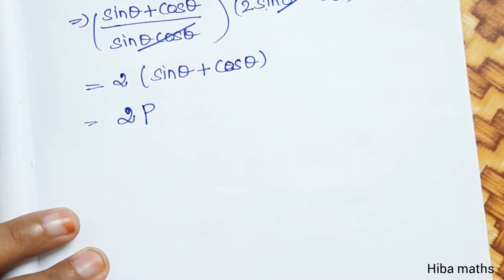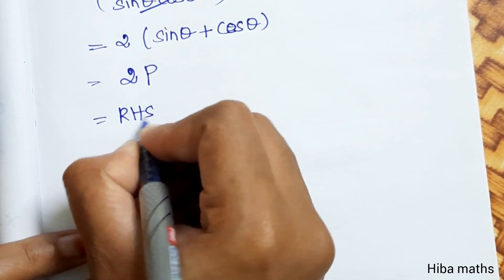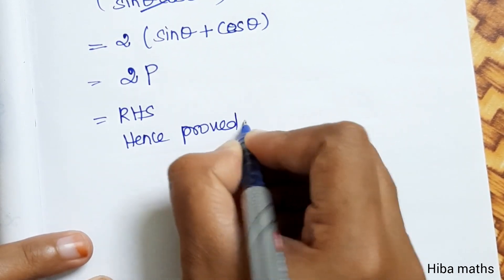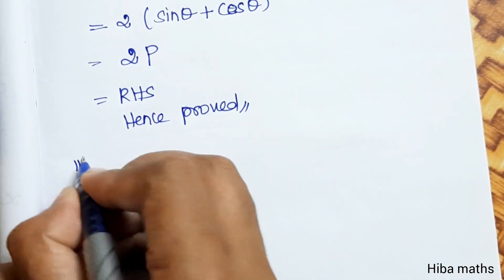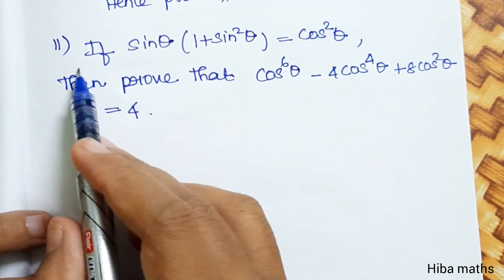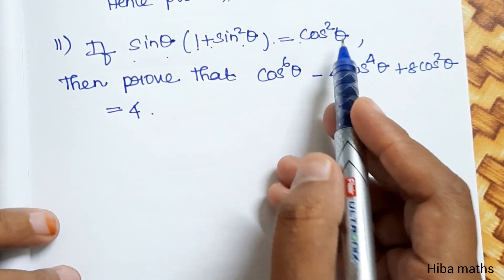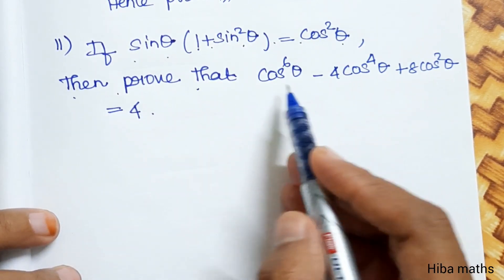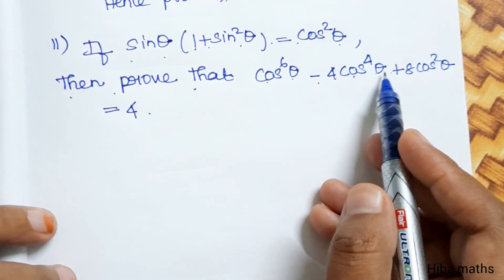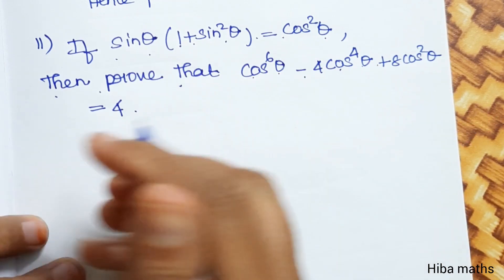So the answer is equal to 2P. Hence proved. If you understand each step, it will be very easy to try. Second subdivision: if sin θ(1 + sin²θ) = cos θ, then prove that cos⁶θ − 4cos⁴θ + 8cos²θ = 4.